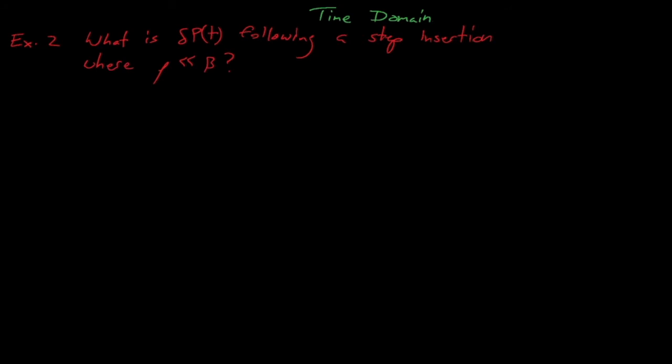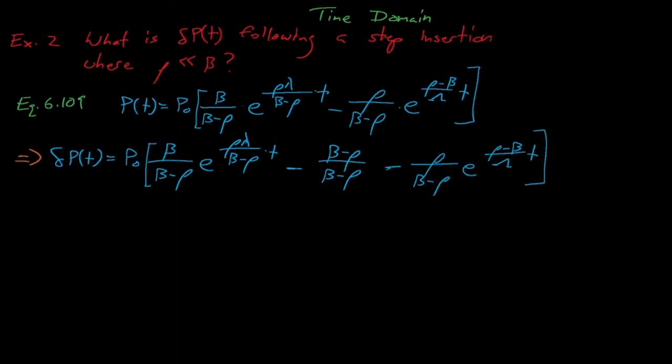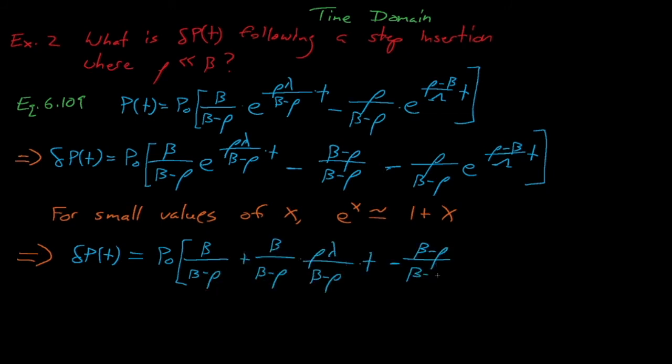For the time domain solution, we'll cheat a little bit by starting with equation 6.109, where we solve the in-hour equation to obtain an expression for our power during a constant reactivity transient. We can convert equation 6.109 to an expression for delta p of t by subtracting p0, which also equals p0 times beta minus rho divided by beta minus rho. Next, we'll introduce the approximation that for small values of x, e to the power of x is approximately equal to 1 plus x.